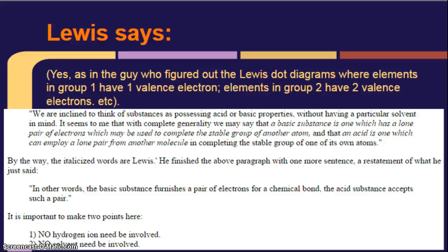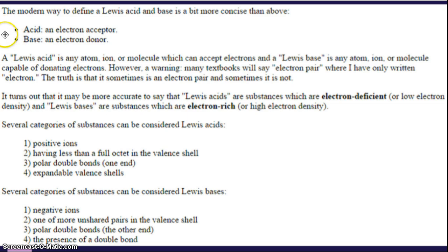In other words, the basic substance, so the base, furnishes a pair of electrons for the chemical bond. The acid substance accepts each pair. So, in other words, Lewis was basically saying, we don't always have it dissolved in stuff, and we don't always have a hydrogen ion. So, we don't need the hydrogen in order to truly have an acid, and we don't need to have it dissolved. So, here's what you should write down for Lewis. The modern way to define a Lewis acid and base is a bit more concise. Acid is an electron acceptor. A base is an electron donor.